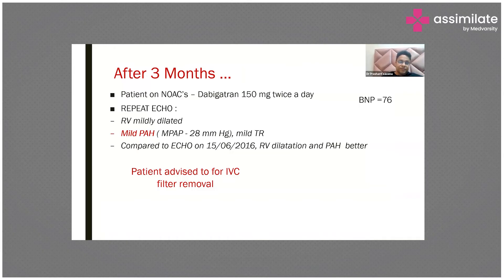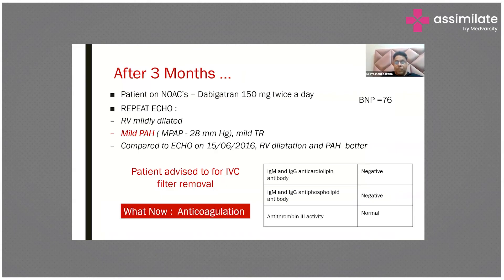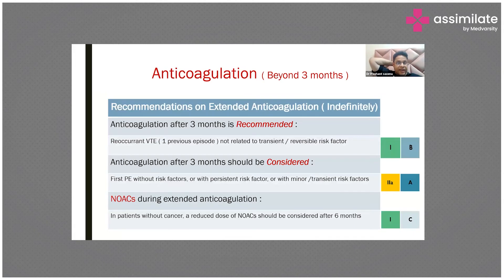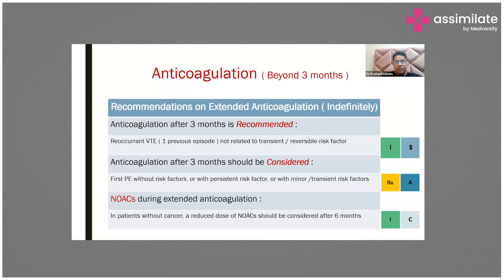The patient was started on NOACs — dabigatran 150 mg twice daily. Repeat echo was done and was satisfactory. We advised IVC filter removal after three months, which was done. All anti-cardiolipin and anti-phospholipid and prothrombotic screening was negative. Anticoagulation guidelines recommend three months of therapy, and more than three months if there is recurrent VTE. If using NOACs, a reduced dose can be used after six months.